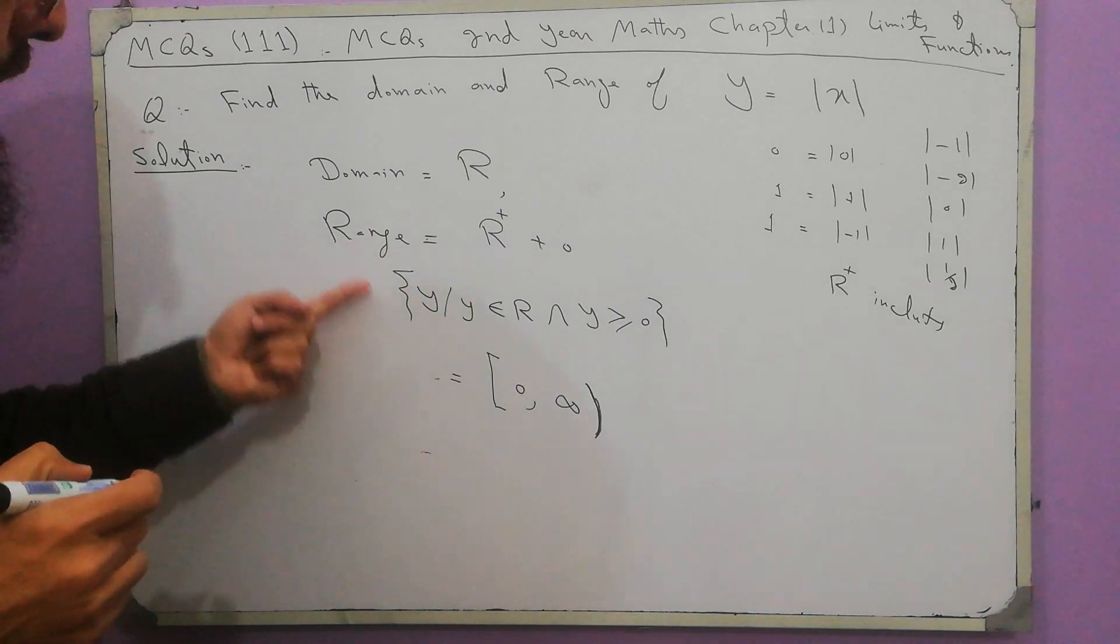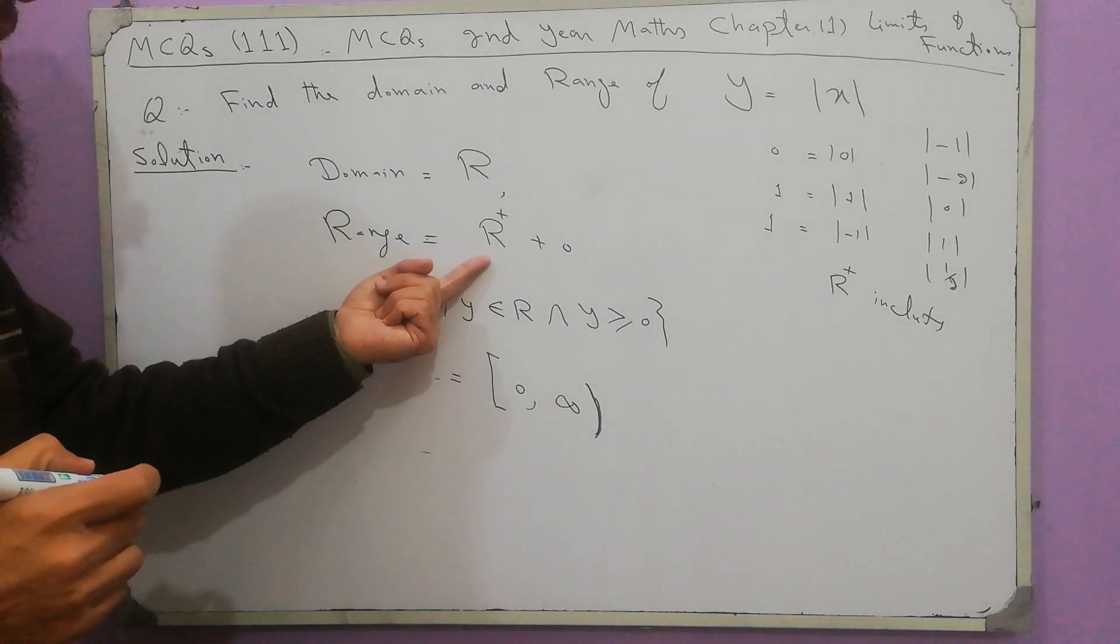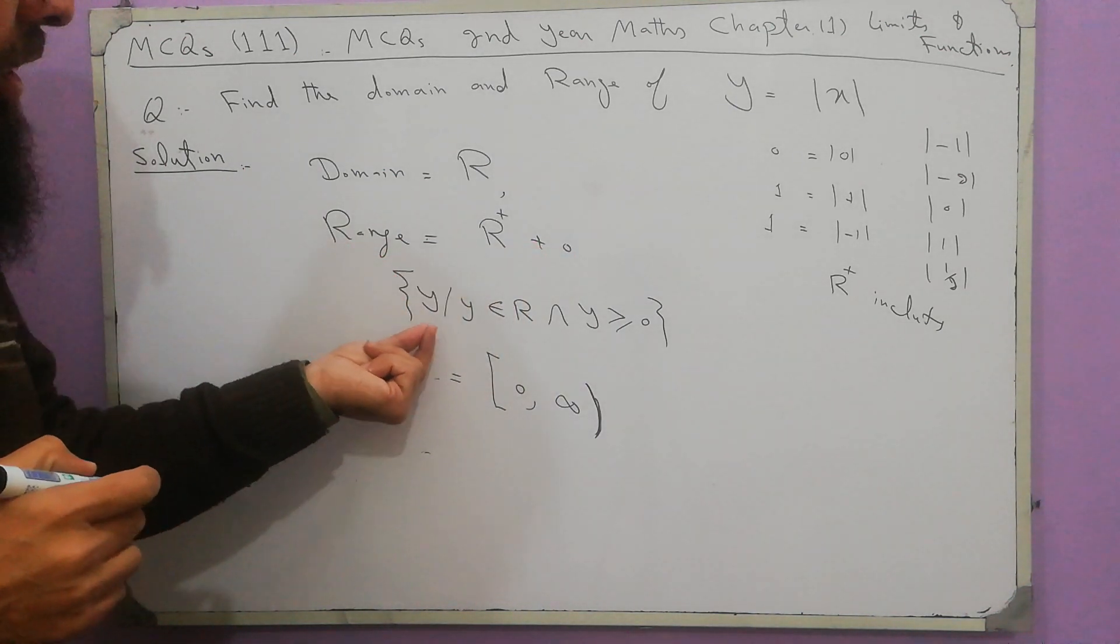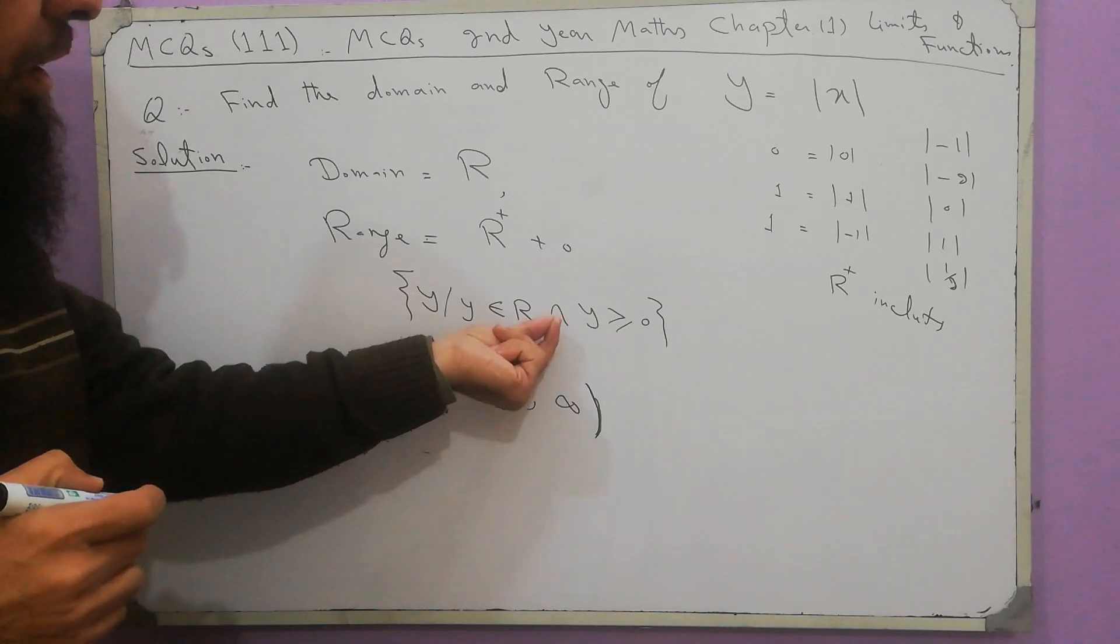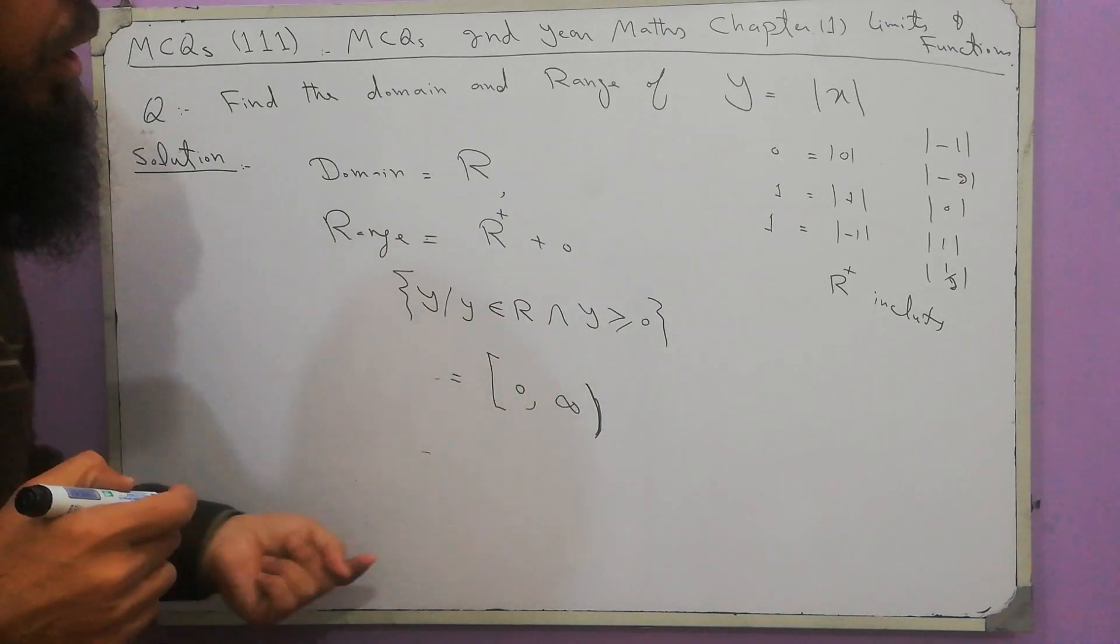We can write the range in different forms: R positive numbers plus 0, Y such that Y belongs to R and Y greater than or equal to 0.